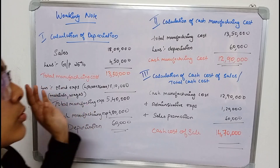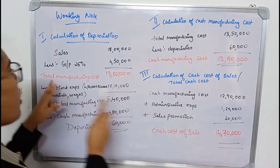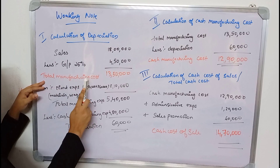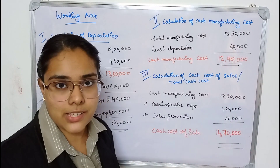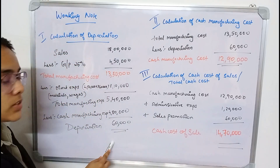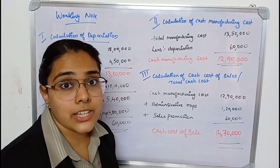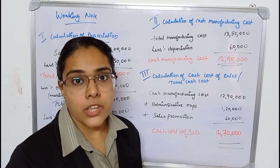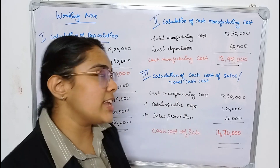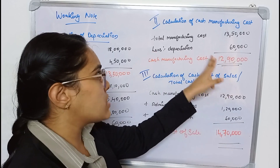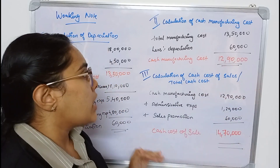Now we calculate the cash manufacturing cost. We already found total manufacturing cost to be 13 lakh 50 thousand. From that, we deduct depreciation of 60 thousand — the non-cash expense — to get the cash manufacturing cost of 12 lakh 90 thousand.